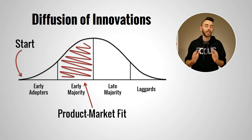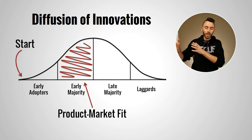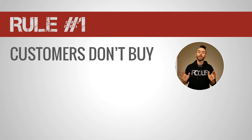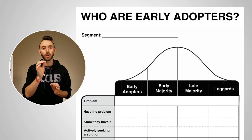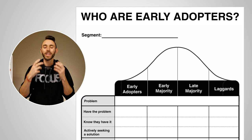So how do we find these people? To know whether we're talking to an early adopter, early majority, or a laggard, we're going to keep one rule in mind. That rule is: customers don't buy products — customers buy solutions to problems. With that in mind, the way to tell the difference between an early adopter, early majority, late majority, and laggard is to assess their relationship to a given problem.